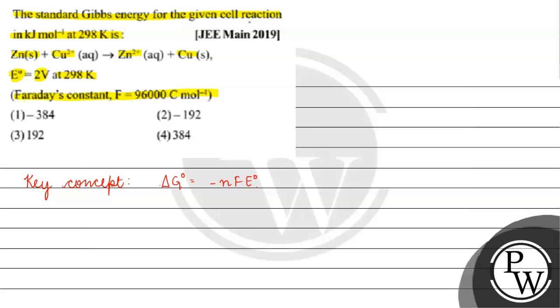N is the number of electrons exchanged. F is the Faraday constant. E naught is the standard electrode potential.